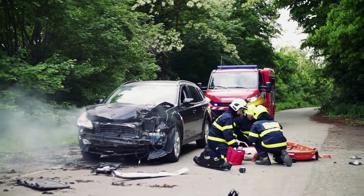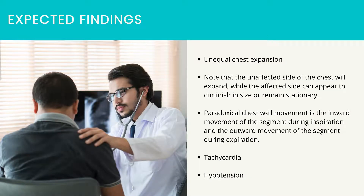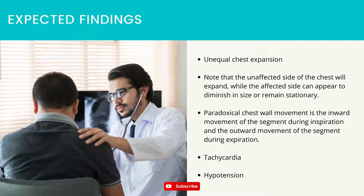Expected findings. Unequal chest expansion — note that the unaffected side of the chest will expand, while the affected side can appear to diminish in size or remain stationary. Paradoxical chest wall movement is the inward movement of the segment during inspiration and the outward movement of the segment during expiration.